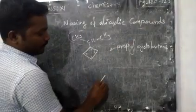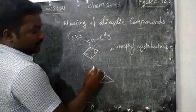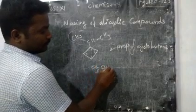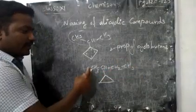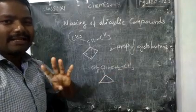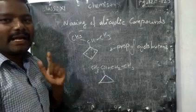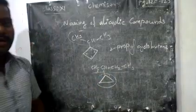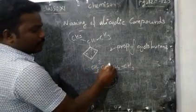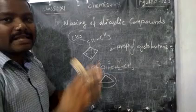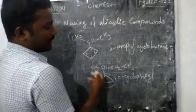Conversely, if the substituent has more carbons than the ring: a 3-carbon ring (cyclopropane) with a 4-carbon chain — the 4-carbon chain is the parent chain (butane). The cyclopropane ring becomes the substituent. The ring attaches at carbon 2 of butane, so the name is 2-cyclopropylbutane.